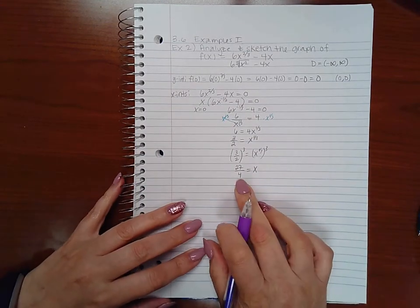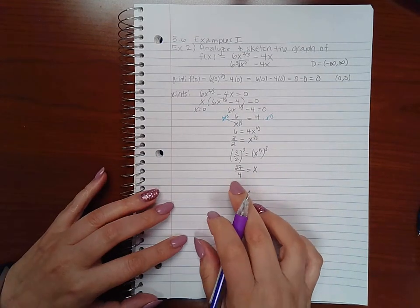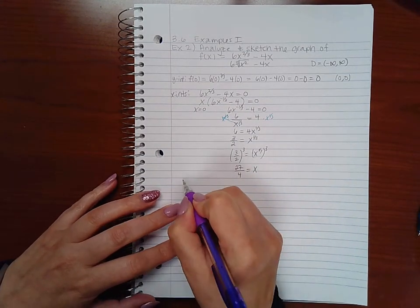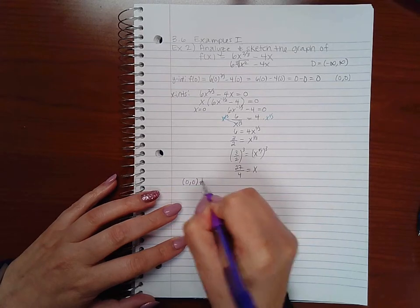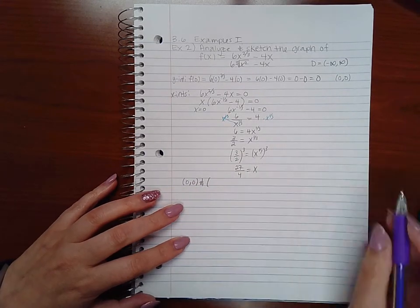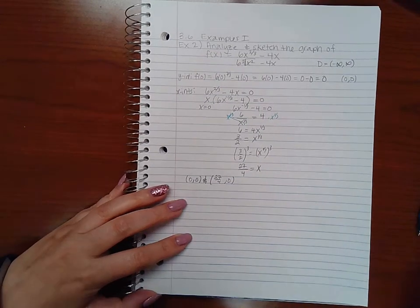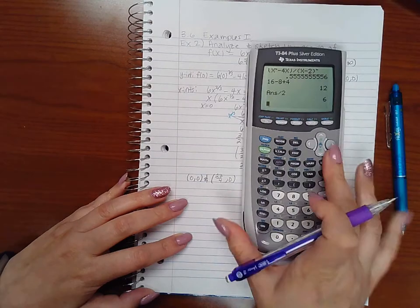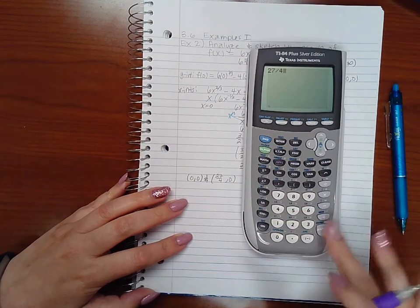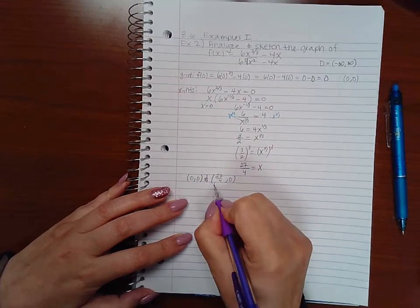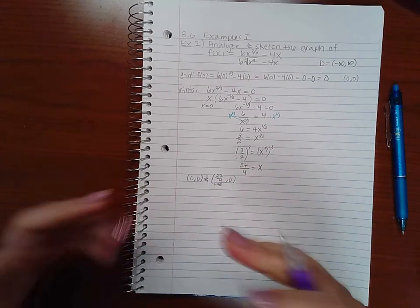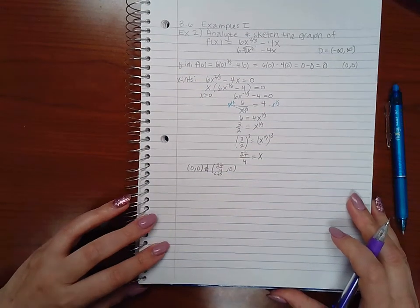So I have another x-intercept at this number here. So that means I have two of them, one at (0, 0), and one at (27/4, 0). Now 27/4 is about 6.75, just so I know where in my graph to draw that point.